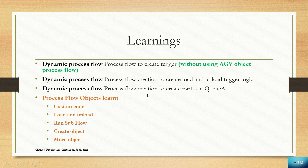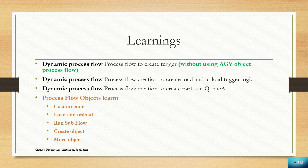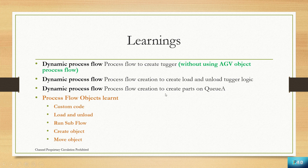From this assignment we are going to learn: creating a dynamic process flow to create a Tugger — and the main highlight is doing this without using the HAB object. We will create dynamic process flow for loading and unloading Tugger logic, and a process flow for creating parts in QA. We will learn custom code, entity, load and unload entity, run a flow, create object, and move object — running the model fully by applying process logic from process flow objects.